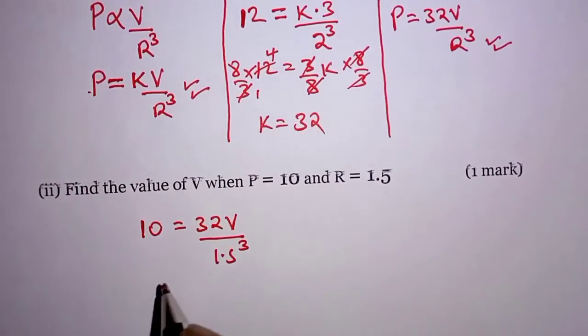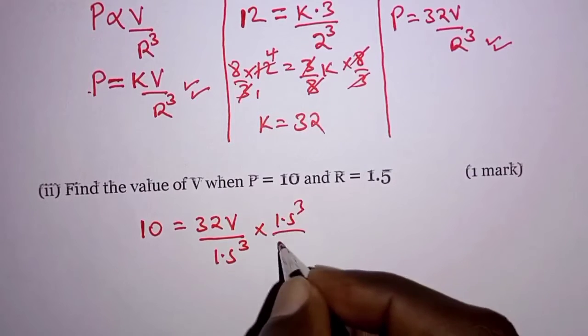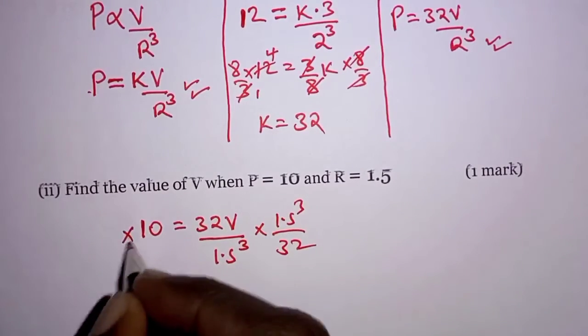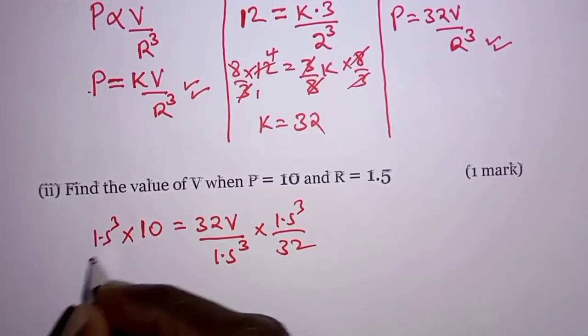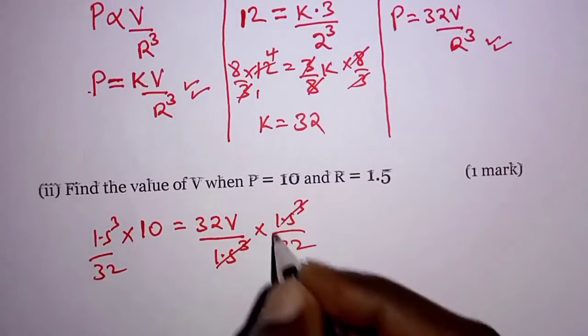So this means if you multiply both sides by 1.5 cubed over 32, 1.5 cubed over 32, then this and this will go.